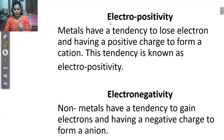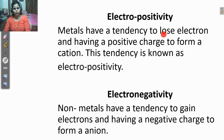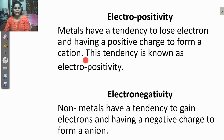Our today's topic is electropositivity and electronegativity. It is related to the tendency of the metals. What is the electropositivity? Electropositivity means metals have a tendency to lose the electron and have a positive charge because they lose electrons, so they form the cation. This tendency is known as electropositivity.